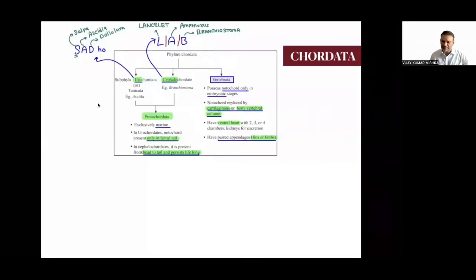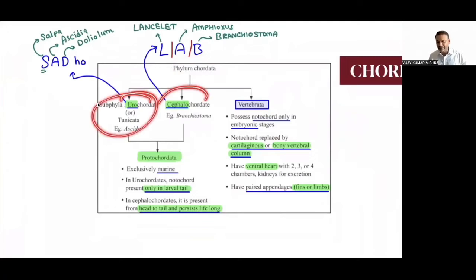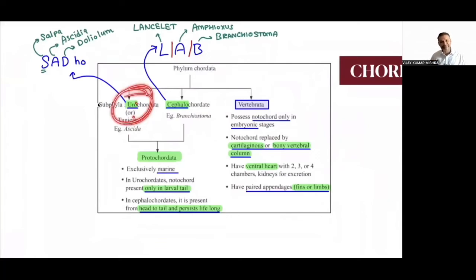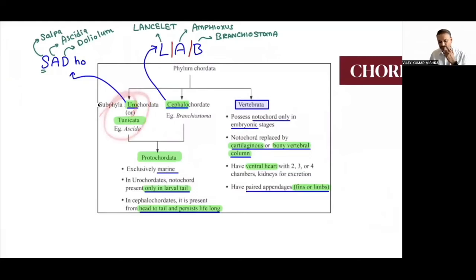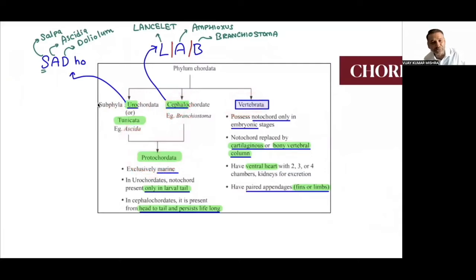Vertebrata is classified into Agnatha (jaw absent) and Gnathostomata (jaw present). Agnatha have circular mouths — 'cyclo' means circular, 'stoma' means mouth — so called Cyclostomata. Their round mouths have no jaw support, making them good blood suckers. Gnathostomata is divided into two superclasses: Pisces (bears fins) and Tetrapoda (four-footed, bears limbs). Tetra = four, poda = foot.